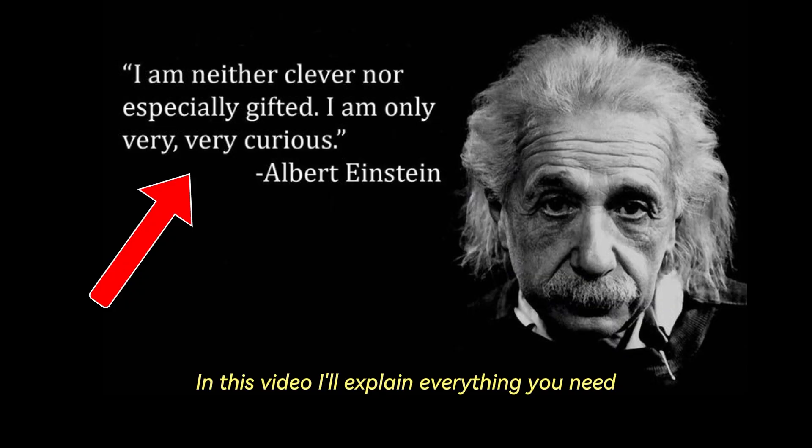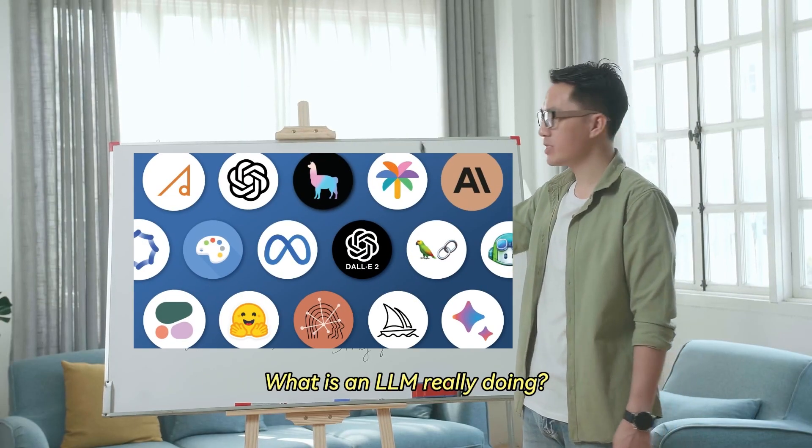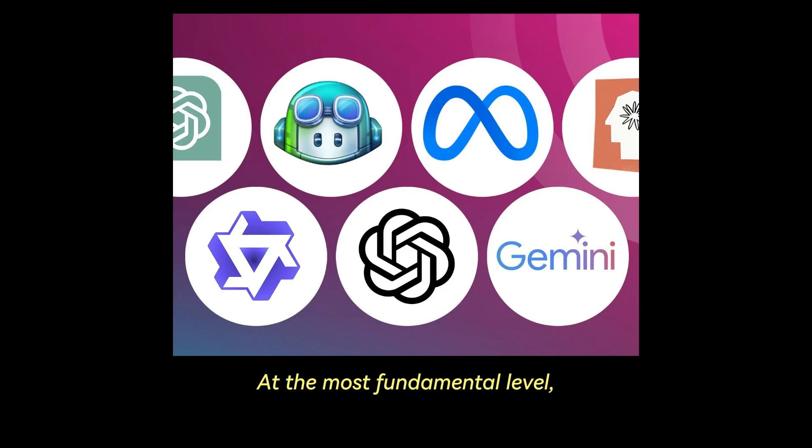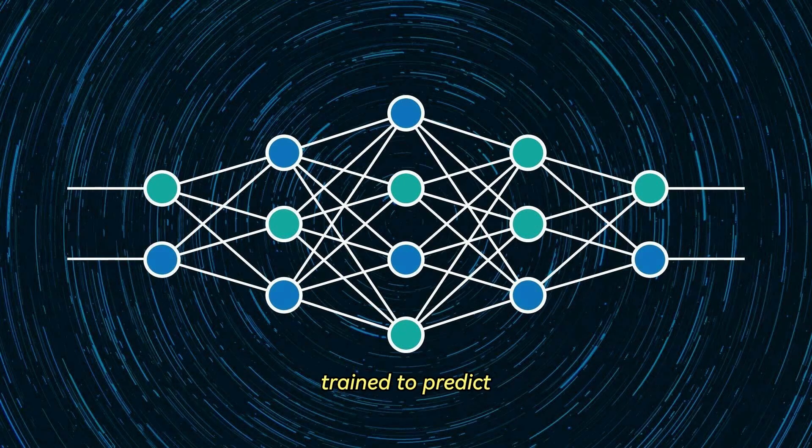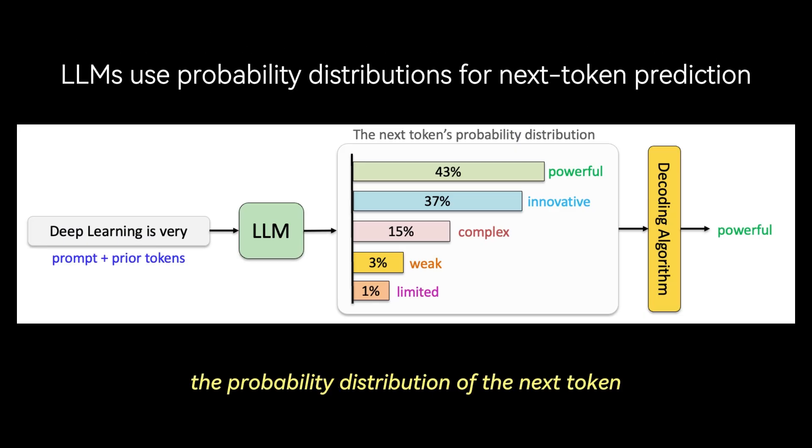In this video, I'll explain everything you need and wanted to know about LLMs. What is an LLM really doing? At the most fundamental level, a large language model is a system trained to predict the probability distribution of the next token in a sequence of tokens or text fragments.